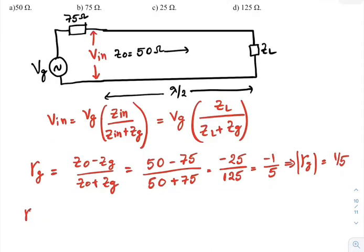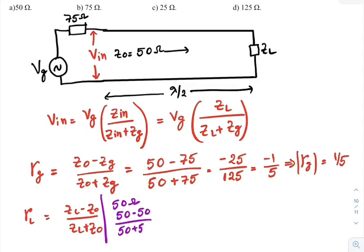In the same way, if you observe the reflection coefficient at the load, gamma L is equal to ZL minus Z0 by ZL plus Z0. Now, if you substitute the value of ZL as 50 ohms, then 50 minus 50 by 50 plus 50, which gives you 0. That means there are no reflections at the load itself. If you go through the second option, 75 minus 50 by 75 plus 50, which gives you 1 by 5.